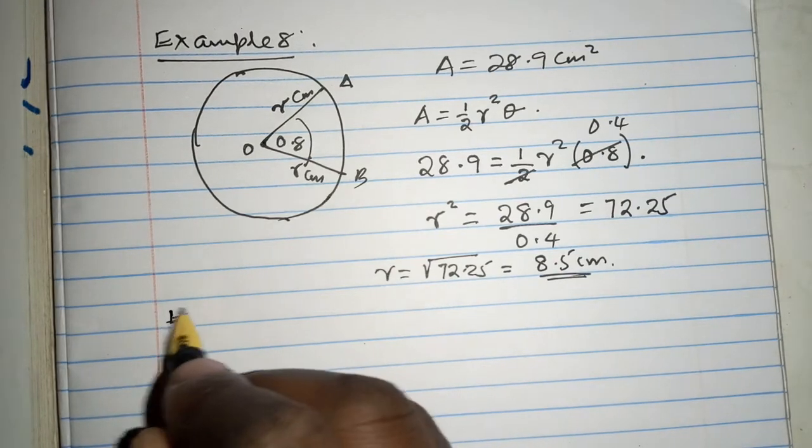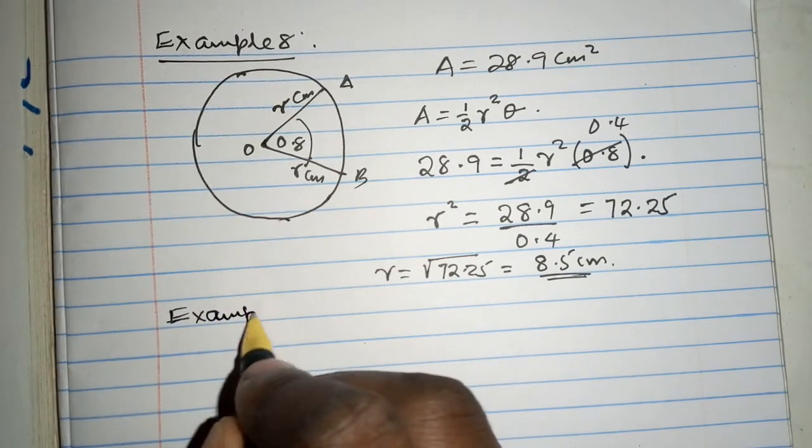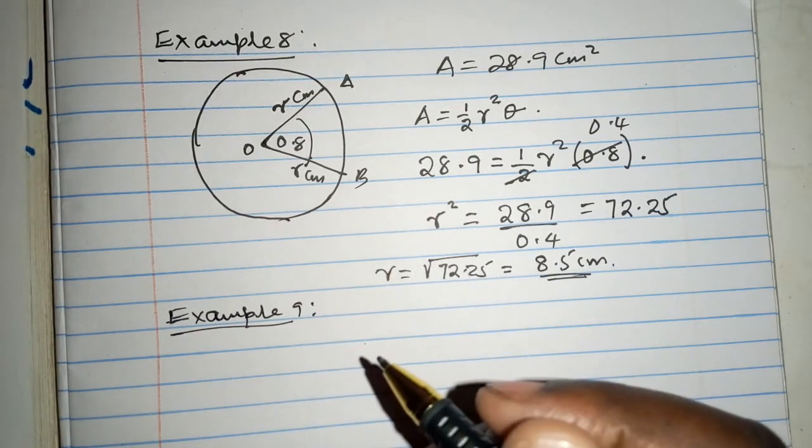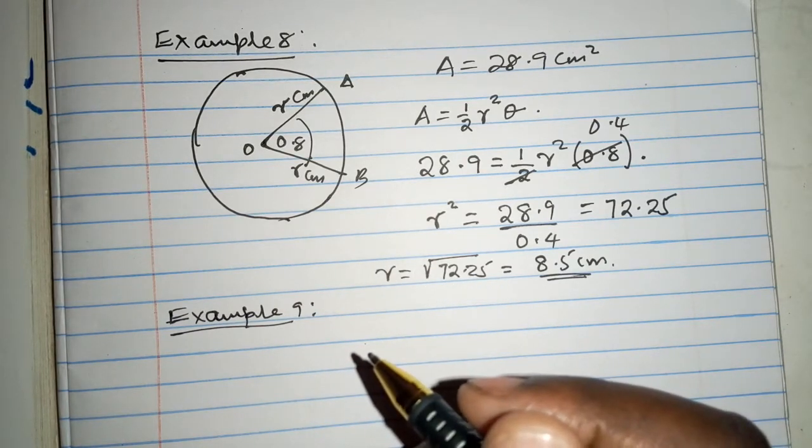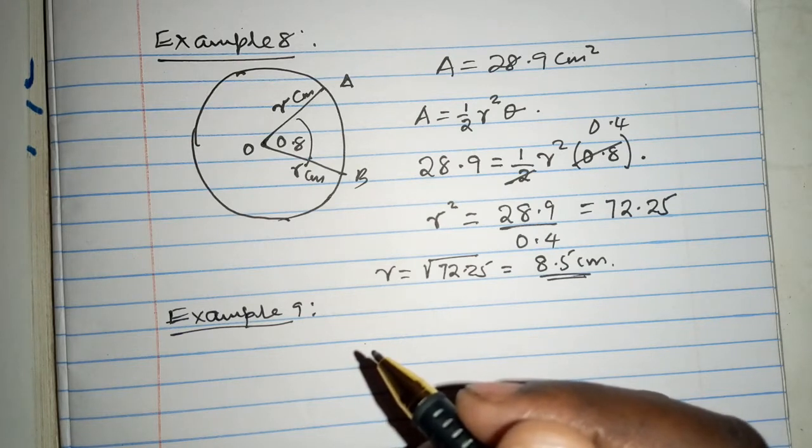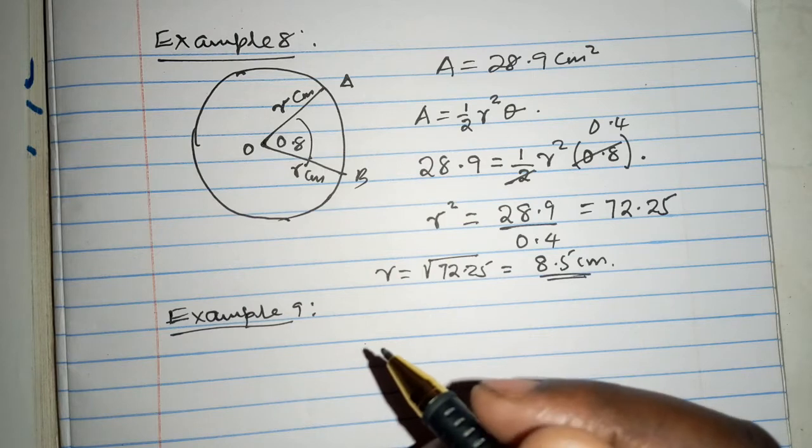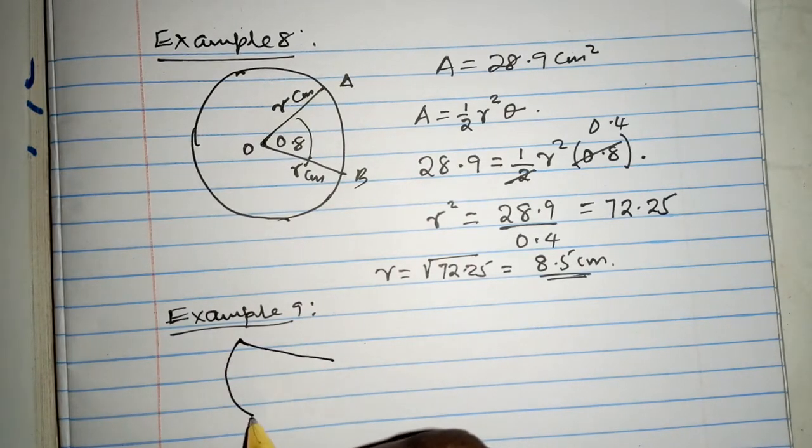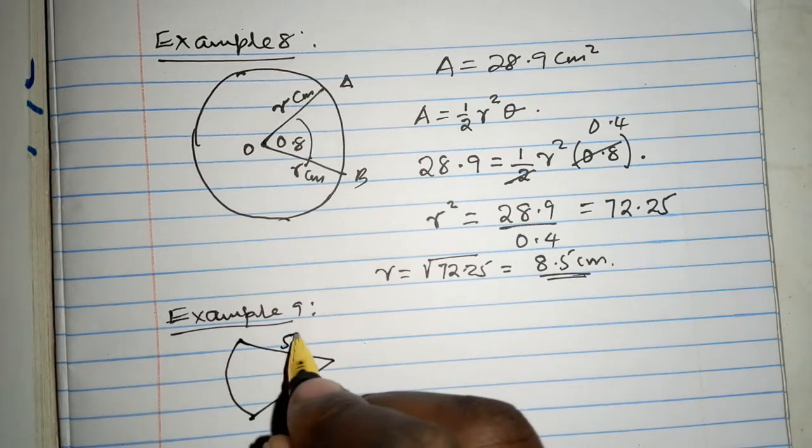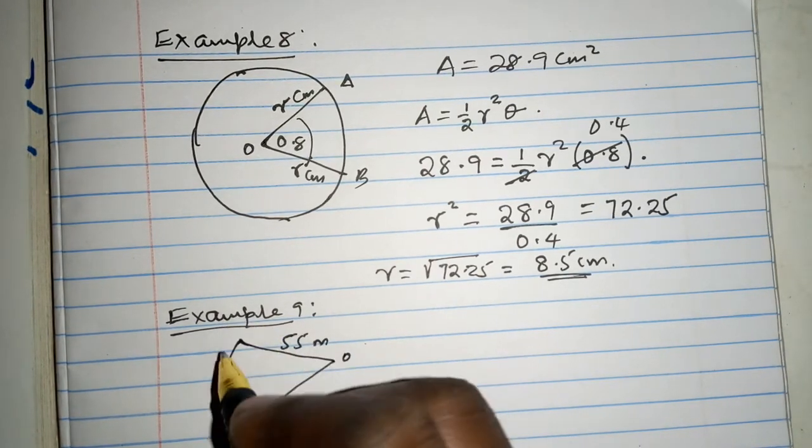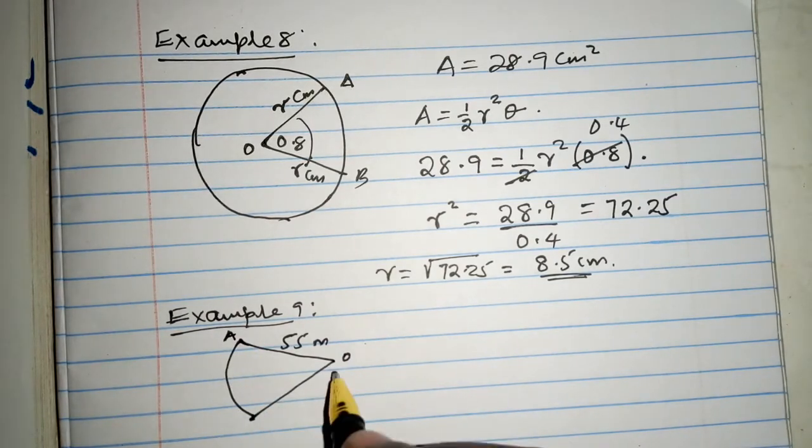In the same video, if we can explain example 9, these are short examples, and we are told that in example 9, a plot of land is in the shape of the sector of a circle of radius 55 meters as shown. Let me have that sector here. This is 55 meters, the radius. This is, let's say, O. This is center O, A and B. And the radius is 55. This is also 55.